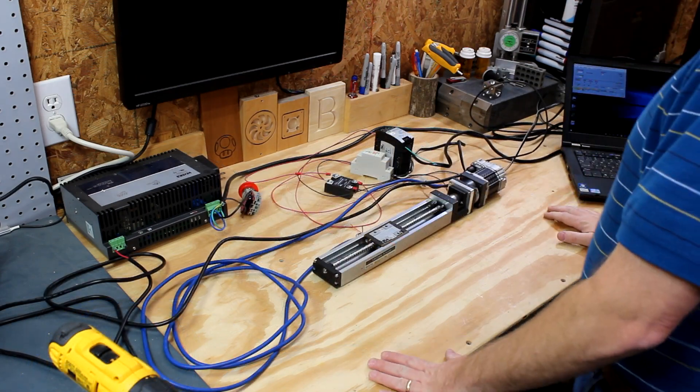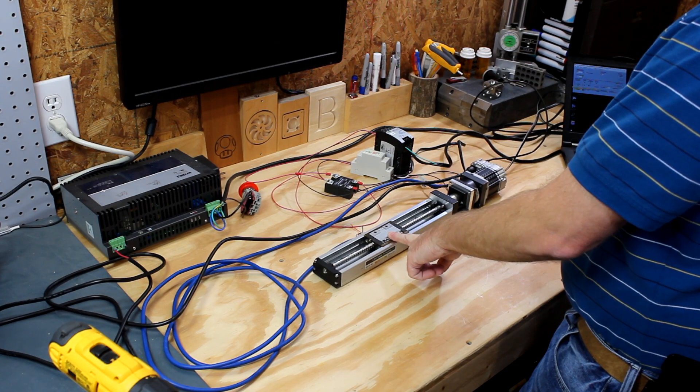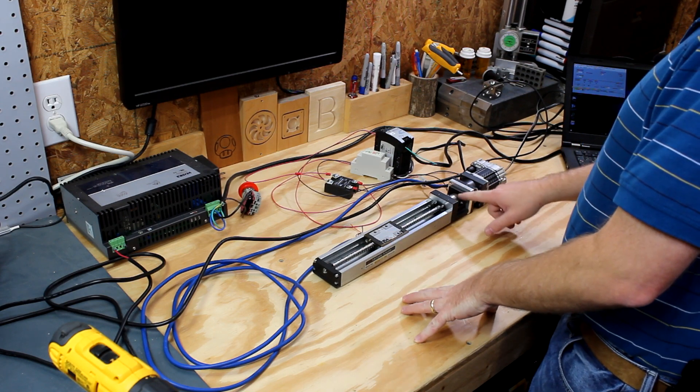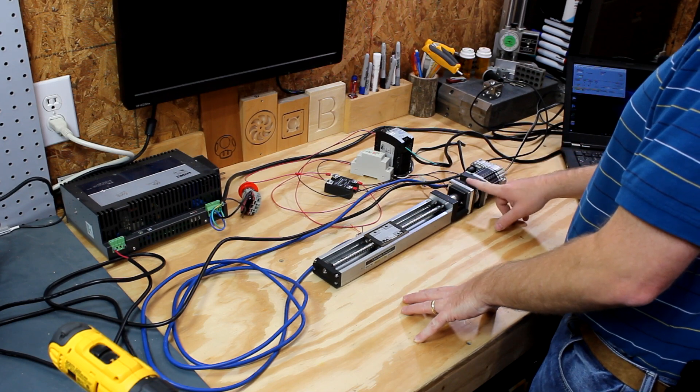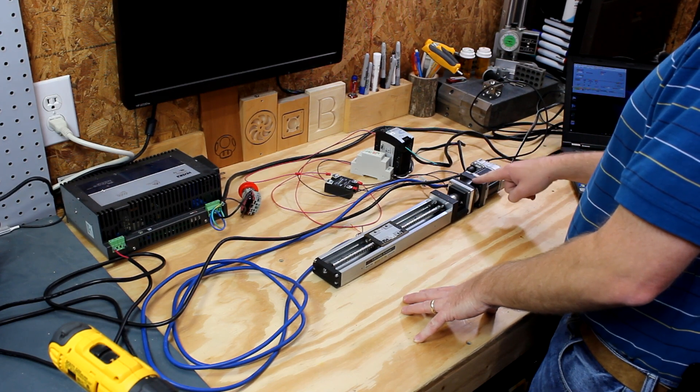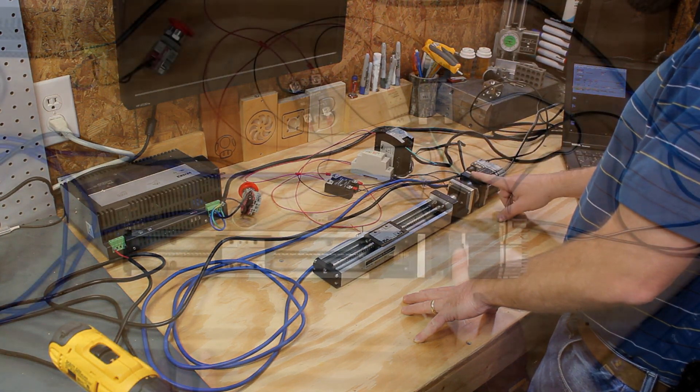Alright, so I've got everything put together. I've got our THK KR33 linear actuator. I've got the coupling that connects the shaft of the ball screw to the shaft of the brake. There's a coupling inside the brake that allows you to tighten up on the shaft from the servo motor and then this whole stack is screwed together.